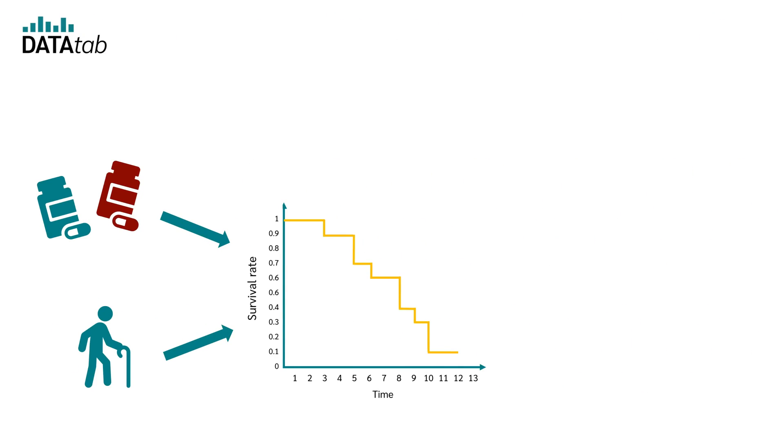So as predictors, we have the drug used and the age of the person. We now want to know what influence these variables have on the survival time curve. And we do this with the Cox regression.